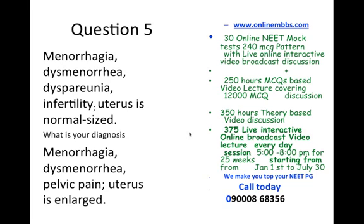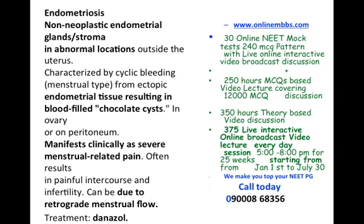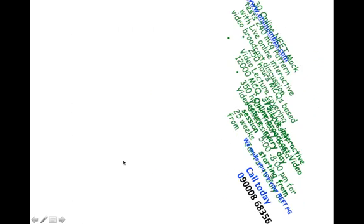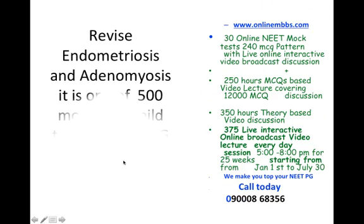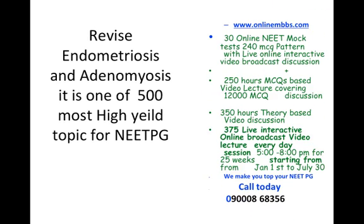Now the next question: menorrhagia, dysmenorrhea, dyspareunia, infertility — but the uterus is normal size. What is your diagnosis? A similar clinical presentation with an enlarged uterus — what is your diagnosis? Endometriosis typically leads to chocolate cysts and severe menstrual-related pain; treatment is danazol, and the uterus size is normal. Revise endometriosis and adenomyosis — they are among the 500 most high-yield topics for the NEET-PG.